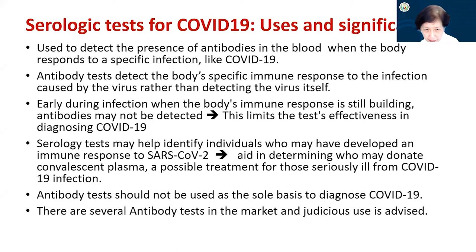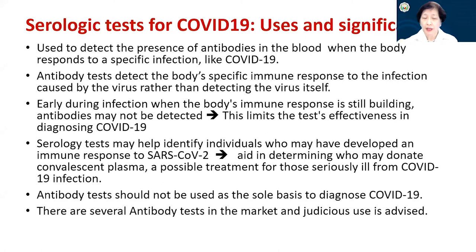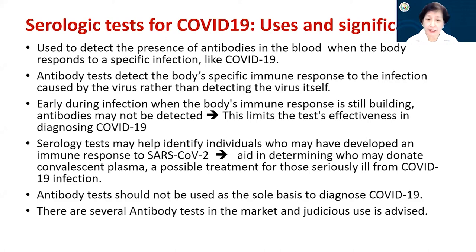One good thing about testing for antibodies is that serologic tests — especially if they are quantitative — may help identify individuals who may have developed an immune response to SARS-CoV-2, and aid in determining who may donate convalescent plasma, which is now a possible treatment for those seriously ill from COVID-19 infection.